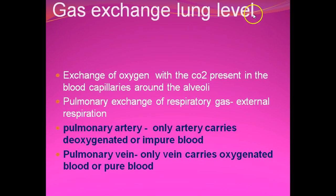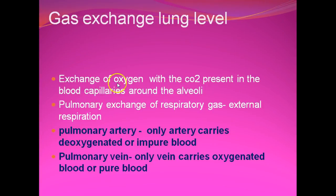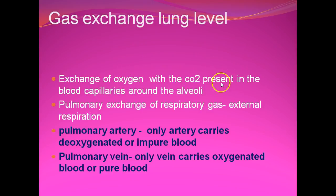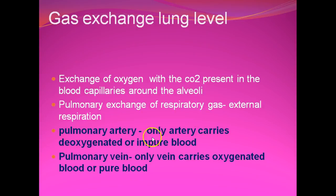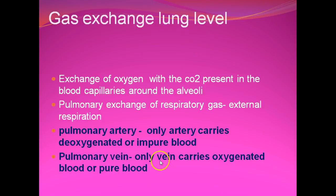Gas exchange at lung level: the exchange of oxygen with carbon dioxide present in the blood capillaries around the alveoli. Air enters the lungs and exchange of oxygen with carbon dioxide occurs in the deoxygenated blood coming from the tissues, in the blood capillaries around the alveoli. This pulmonary exchange of respiratory gas is called external respiration. Something special here is about the pulmonary artery and pulmonary veins.